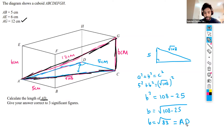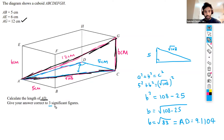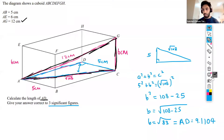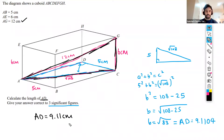Root 83, using a calculator, gives 9.1104. They want the answer to three significant figures, so that's simply 9.11. AD is equal to 9.11 centimeters.